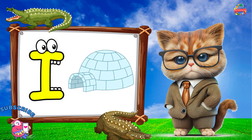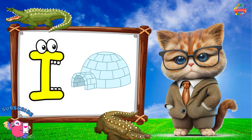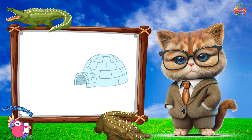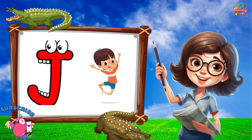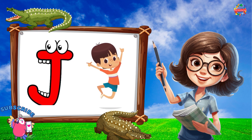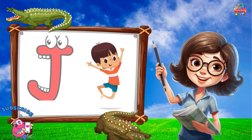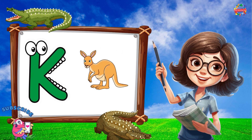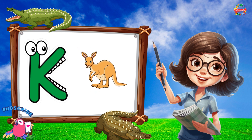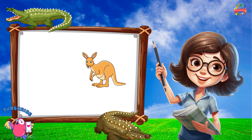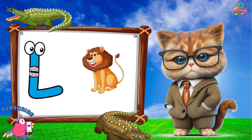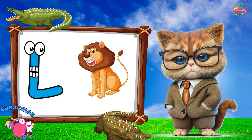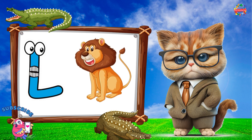I is for Igloo, I-I-Igloo. J is for Jump, J-J-Jump. K is for Kangaroo, K-K-Kangaroo. L is for Lion, L-L-Lion.